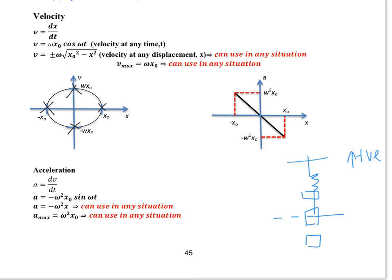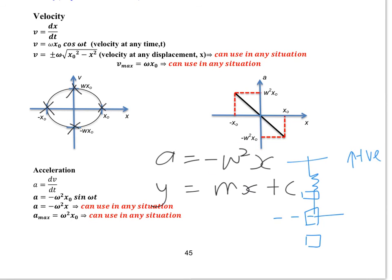To plot a versus x, use the equation a = -ω²x. Comparing with y = mx + c, the gradient is -ω² (a negative constant) and the y-intercept is zero. So the graph of a versus x is a straight line with a negative gradient passing through the origin. Like v versus x, this graph is also the same for all three starting situations.